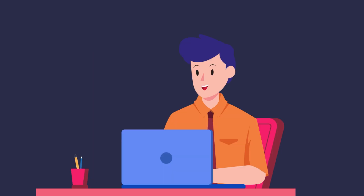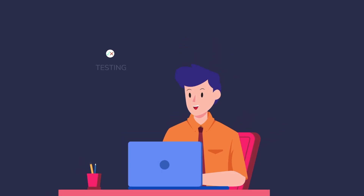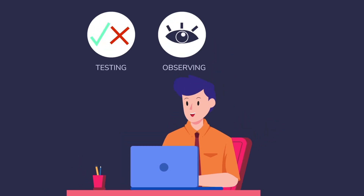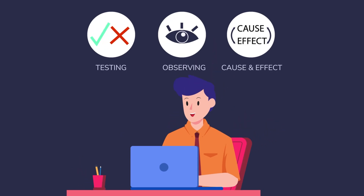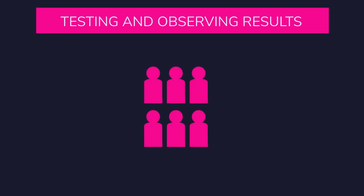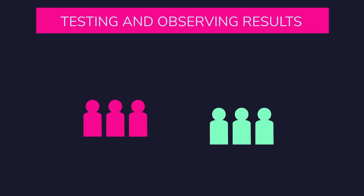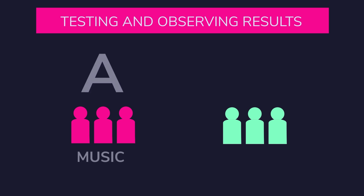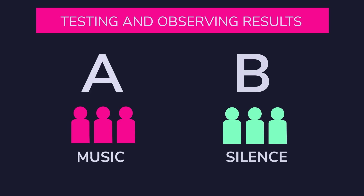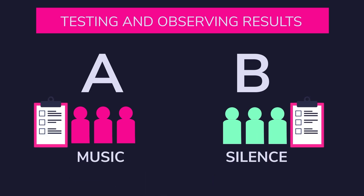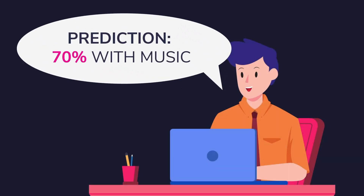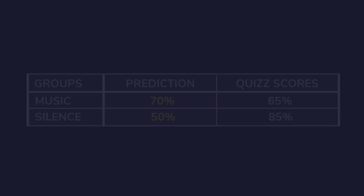Experiments are a bit different from surveys. They are all about testing something to observe what happens, and they help us find cause and effect relationships. Here's how to set it up: 1. Divide your participants into two groups. 2. Group A studies with music, while Group B studies in silence. 3. Give both groups the same quiz and compare their scores. Before starting, make a prediction — which group do you think will do better? Write it down.